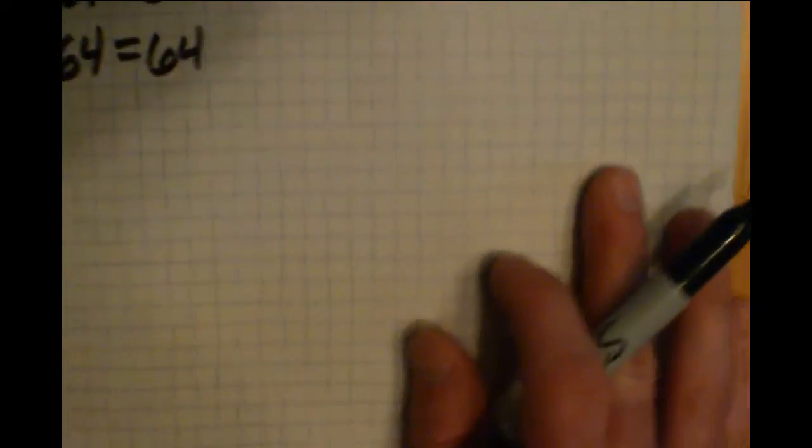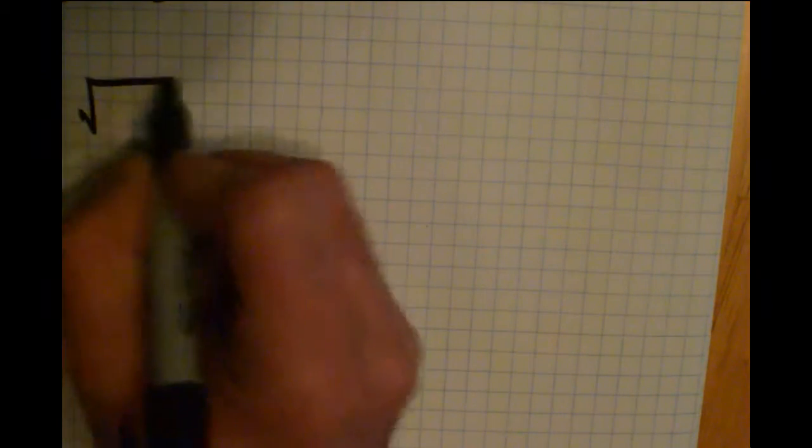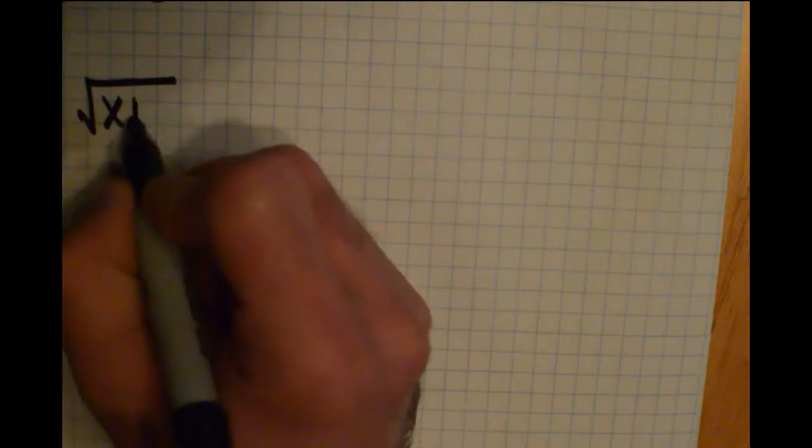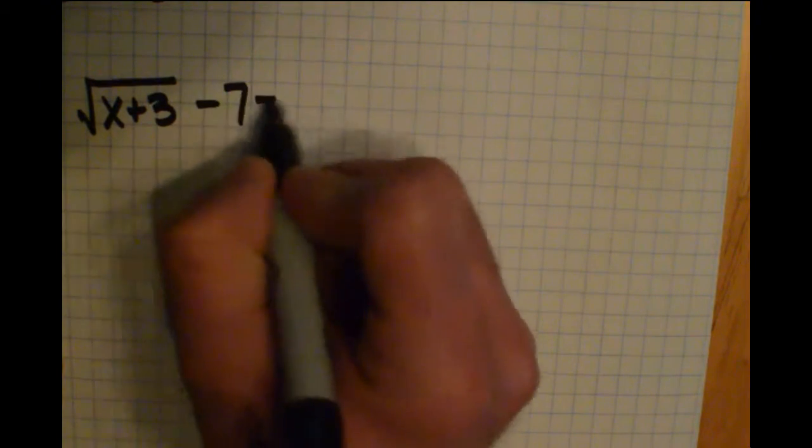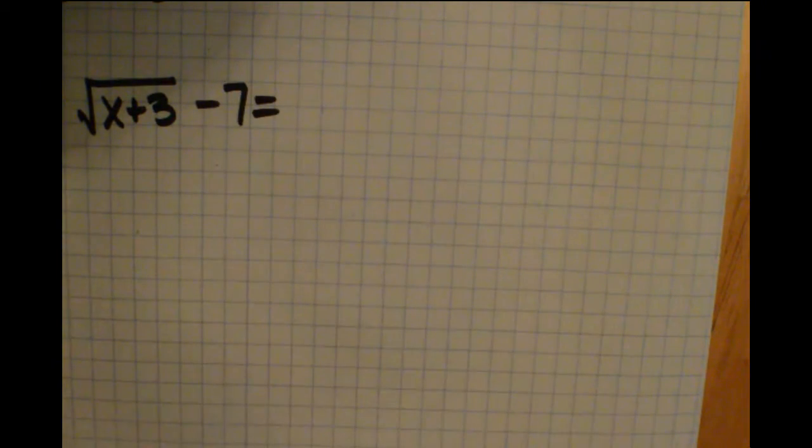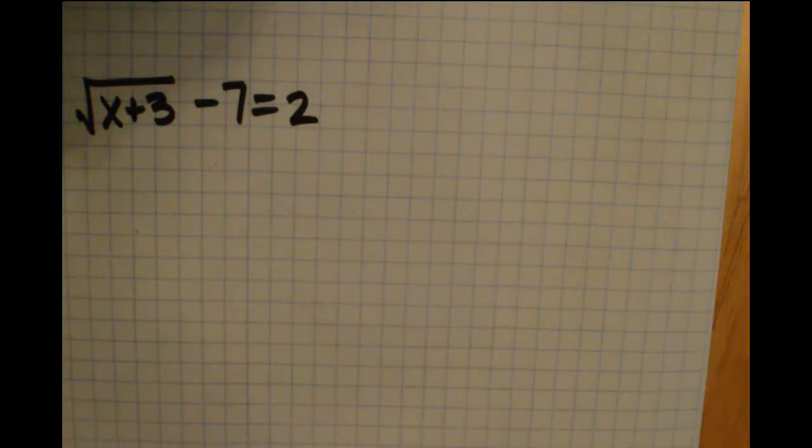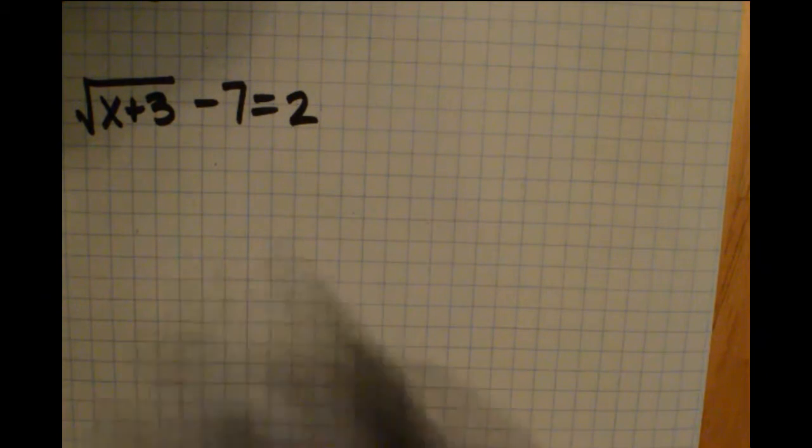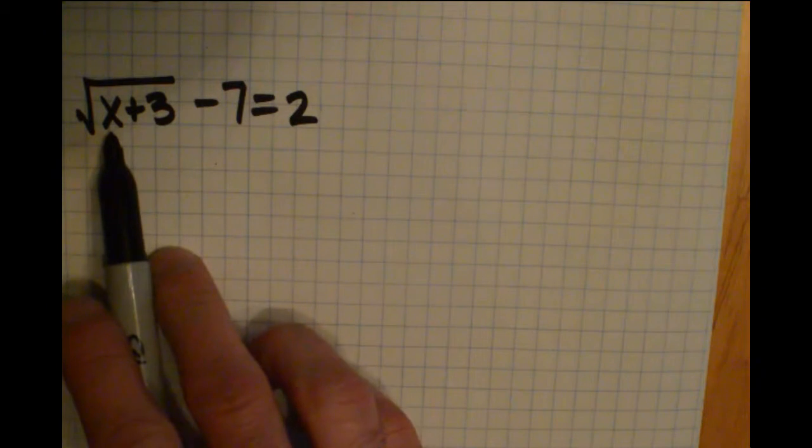So let's take that idea and look at a few examples of solving a radical equation. Let's say we have square root of x plus 3 minus 7 is equal to 2. So the goal here is to get this variable x by itself,